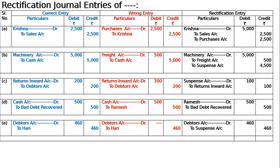The rectification entry is: debtors account debited 460, to suspense account 460 — because all other accounts are correct. Narration: Hari's account of Rs. 460 not included in debtors, now included in debtors. The rectification journal entries are totaled at Rs. 11,060 on both the debit and credit side, which is correct.